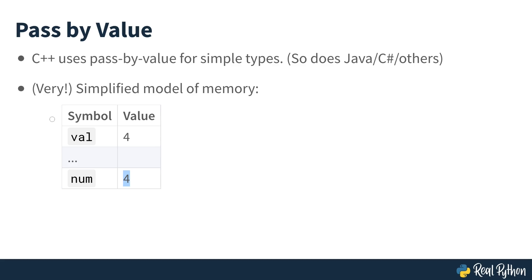Now, I know this is a very simplified explanation of how memory works, but hopefully it illustrates the point that I want to make. The value of val 4 is copied to be the value of num. Pass-by-value.